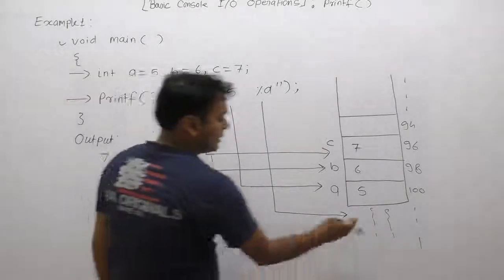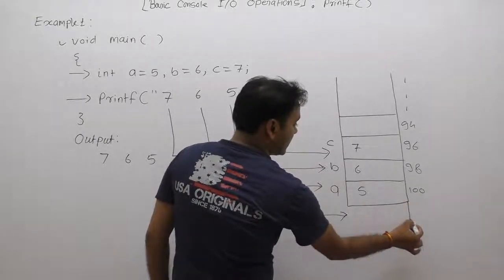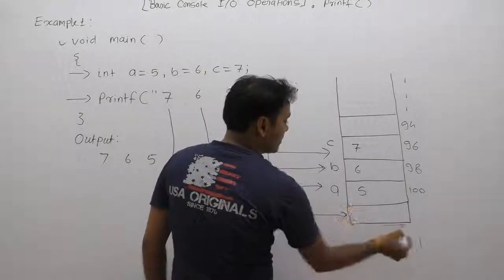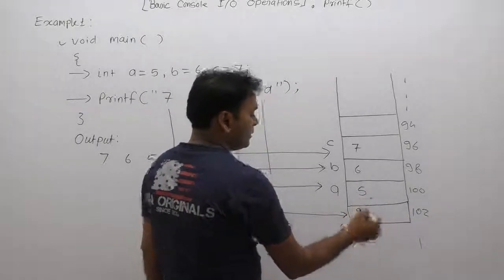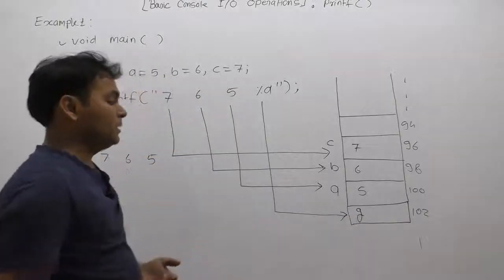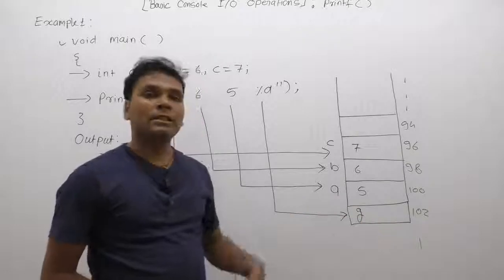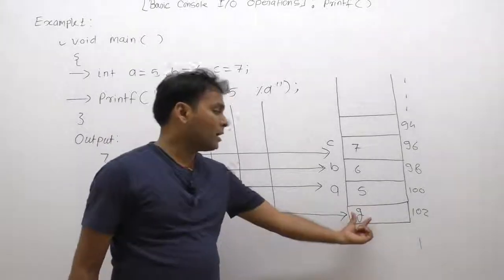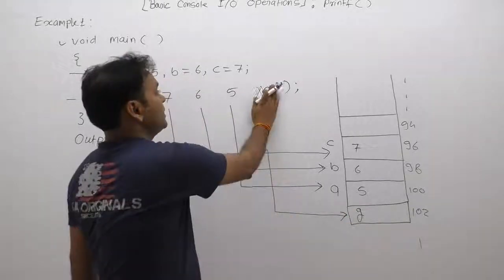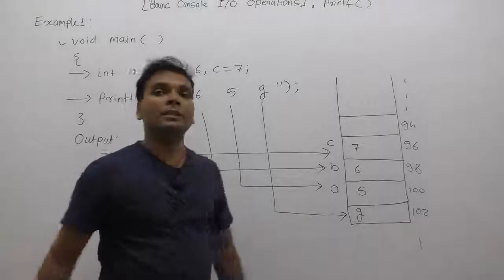Suppose that next location, maybe some reserved locations like 102, then this value is unknown for you and me. We are not able to explain about that case. Printf can take any garbage value. Therefore we are considering some unknown or garbage value. This is the basic behavior of printf.